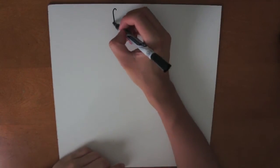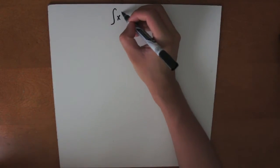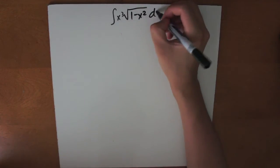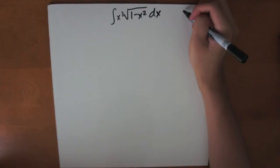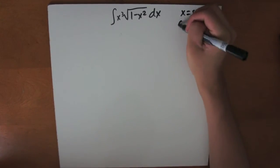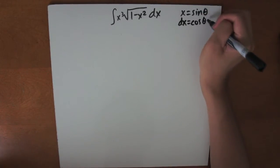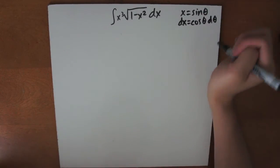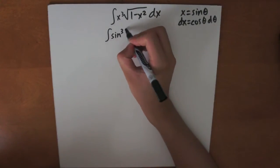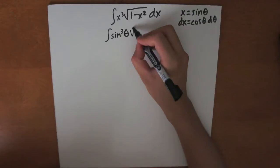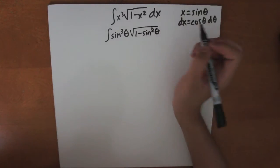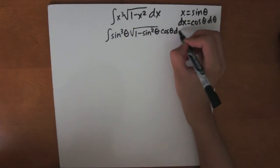So now let's try the integral of x cubed times the square root of 1 minus x squared dx. We first realize we must use the substitution x equals sine theta. Therefore, dx is equal to cosine theta d theta. Now let's plug this back into the integral and we get sine cubed theta times the square root of 1 minus sine squared theta times cosine theta d theta.